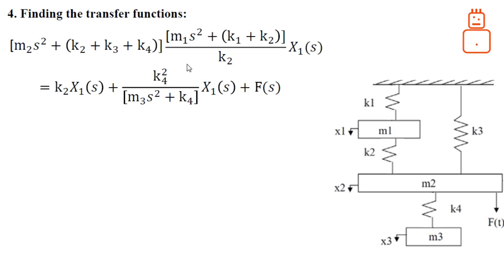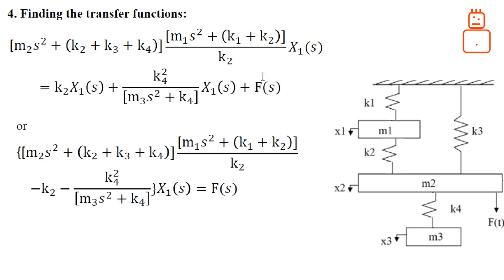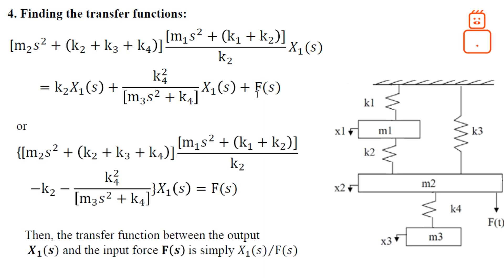This is the final form, so this equation is in terms of x1, which is the corresponding output that we want to derive the transfer function for, in terms of the input F(s). Do a little bit of arrangement and then simply you can take the ratio between x1 and F(s) from this equation, and then you can find the transfer function between the output x1 and F(s).